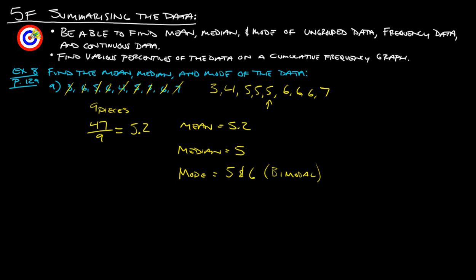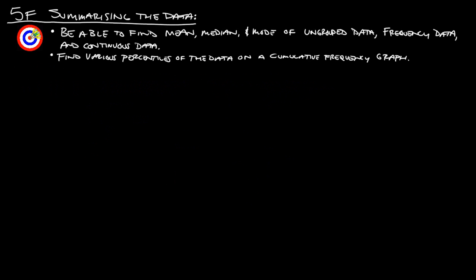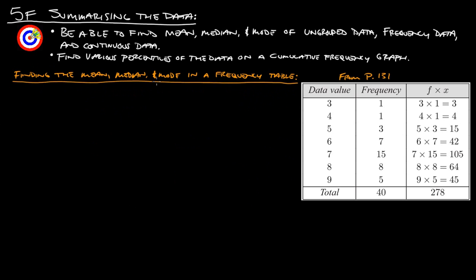Let's take a look at how to find the mean, median, and mode in a frequency table. This is from page 131 in your book. In this table, the value three occurred once, four occurred once, five occurred three times, six occurred seven times, seven fifteen times, eight eight times, and nine five times. So there are 40 total pieces of data.